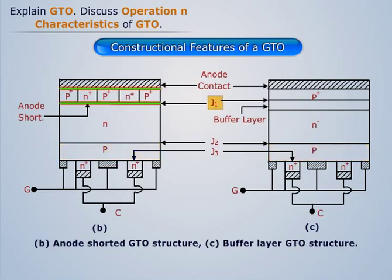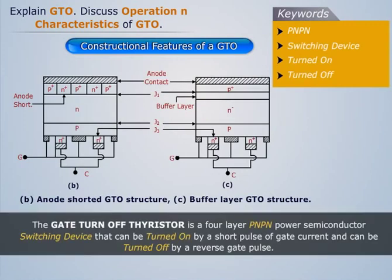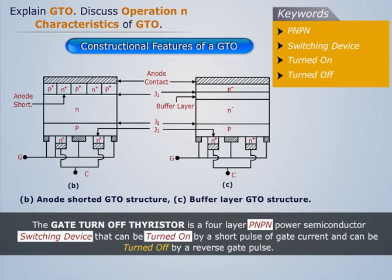Thus, the gate turn-off thyristor is a four-layer PNPN power semiconductor switching device that can be turned on by a short pulse of gate current and turned off by a reverse gate pulse.